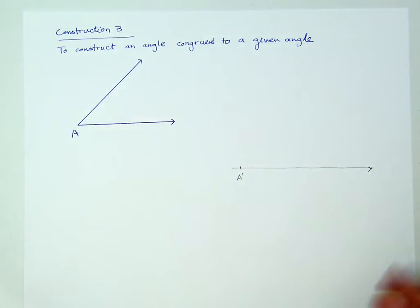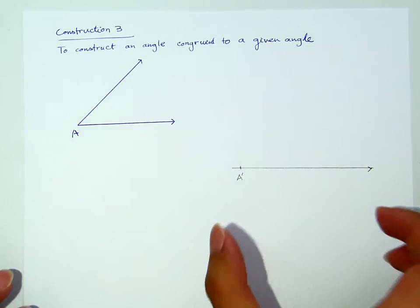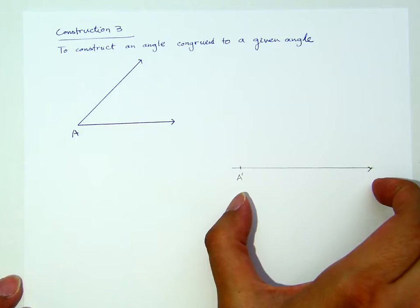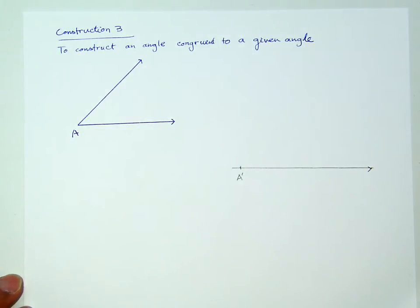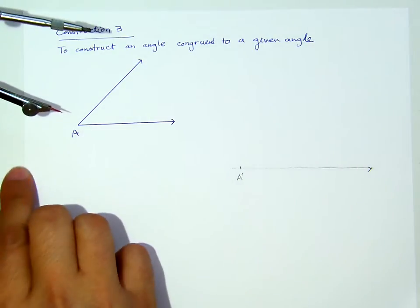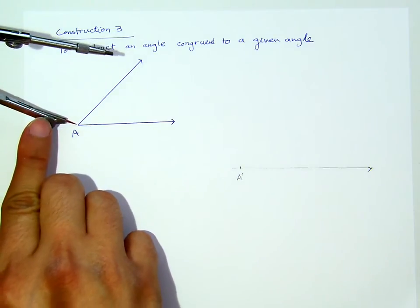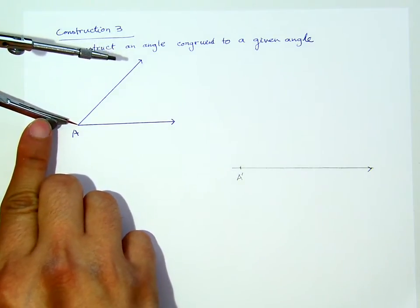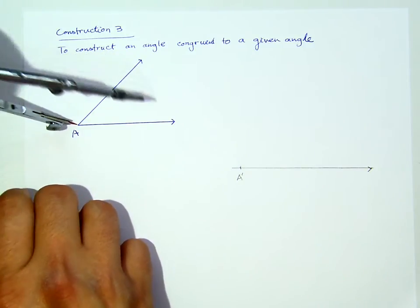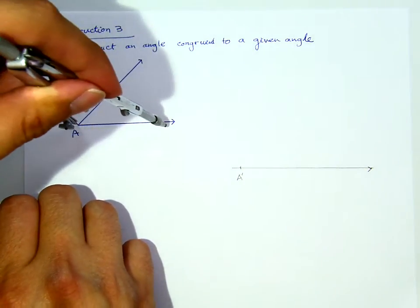You should try to imagine that this ray here should be longer than the one there. Now, what I will do next is grab my compass with pivot point, pivot leg placed at A, with a certain opening big enough, not too small.